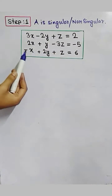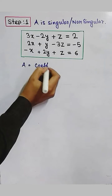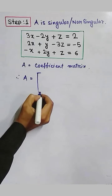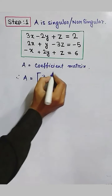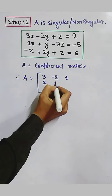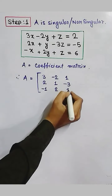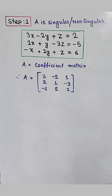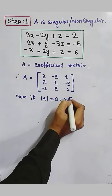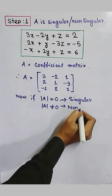We will check if A is singular or non-singular. A is the coefficient matrix, so we will write the coefficient matrix A. The coefficients are: first row 3, minus 2, 1; second row 2, 1, minus 3; third row minus 1, 2, 1. We know that if the determinant value of A is 0, then A is a singular matrix, and if the determinant value is not equal to 0, then it is called a non-singular matrix.